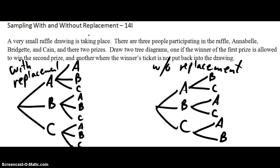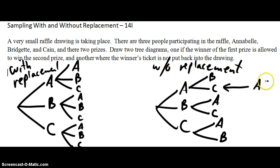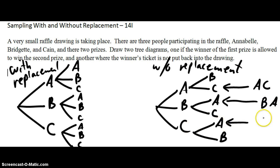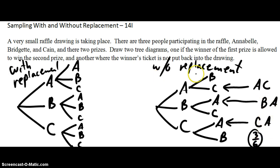So given that, if I asked a problem like: what is the probability that Annabelle might win one of the prizes without replacement? Well, there would be Annabelle-Kane, there would be Bridget-Annabelle, and there would be Kane-Annabelle. So three out of six — Annabelle wins at least one of them without replacement.